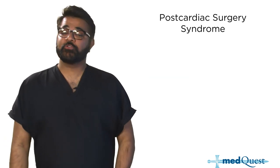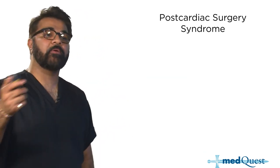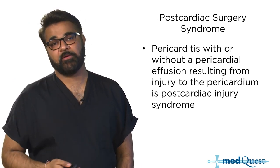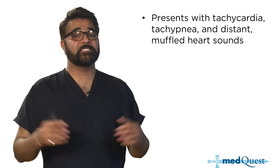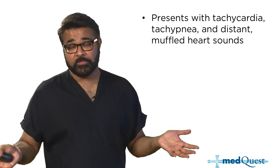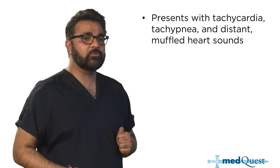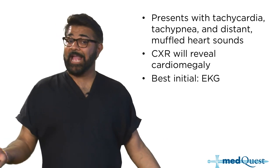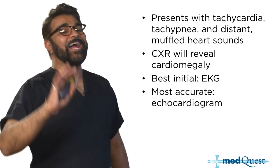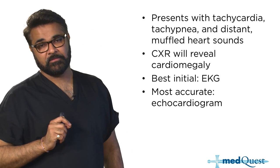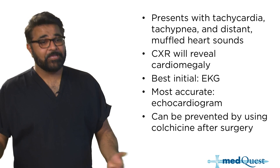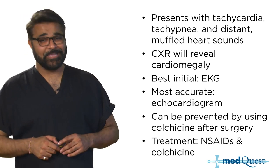Post-cardiac surgery syndrome is a type of pericarditis that occurs with or without an effusion after injury to the pericardium, classically after cardiac surgery. It presents with tachycardia, tachypnea, and distant muffled heart sounds. Chest X-ray shows cardiomegaly. The best initial test is EKG; the most accurate is echocardiogram. Prevention is with colchicine after surgery. If it occurs, treat with NSAIDs and colchicine.